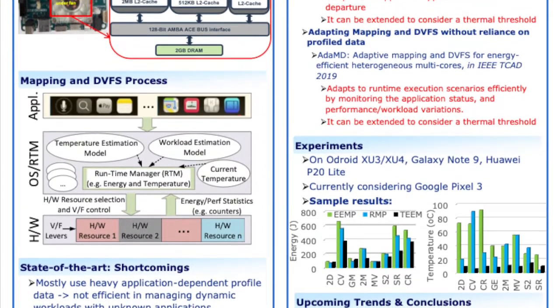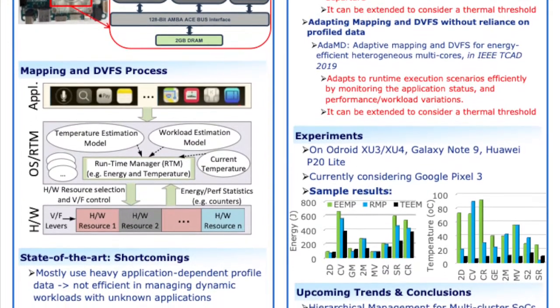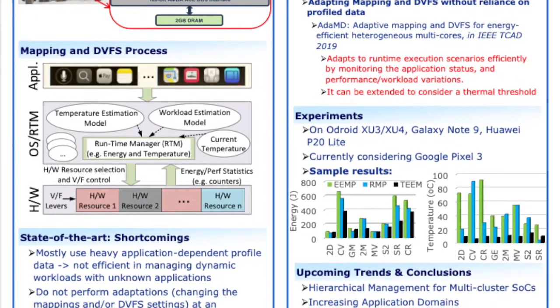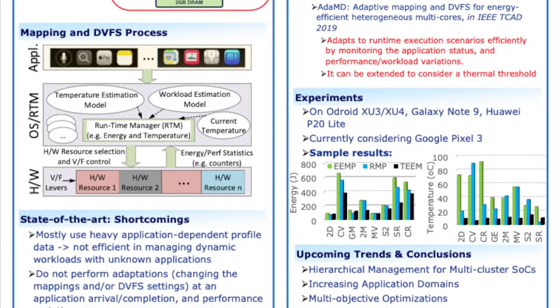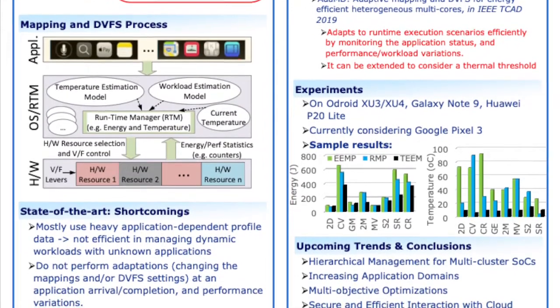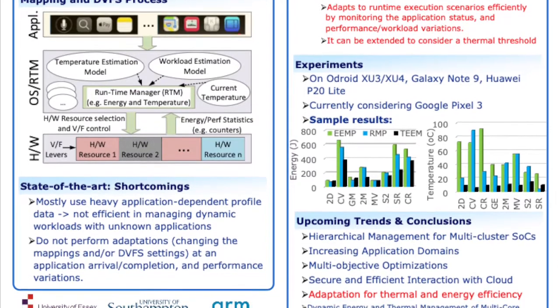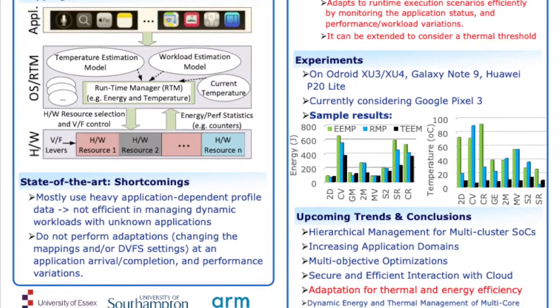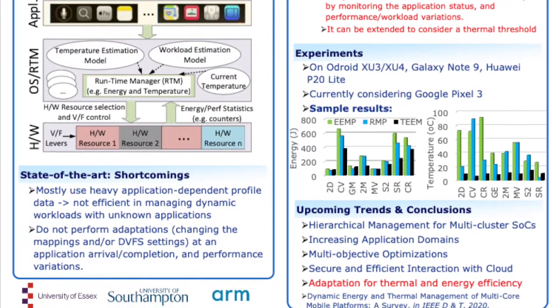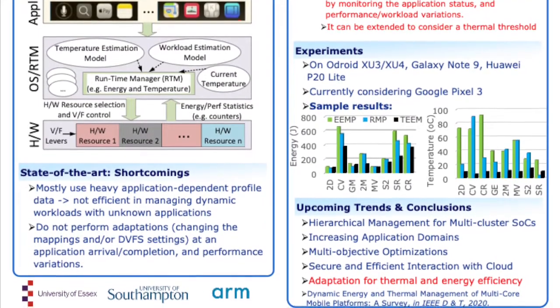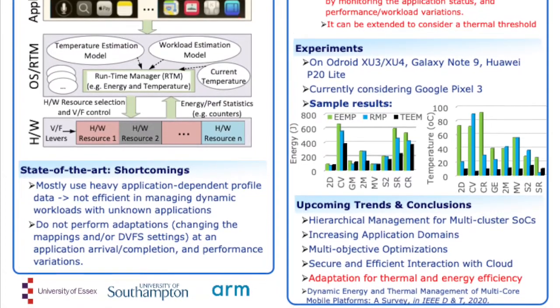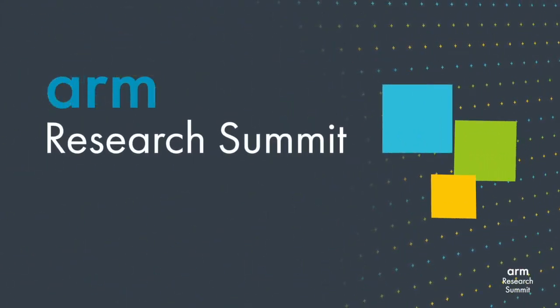Some upcoming trends: we feel there will be hierarchical management for multi-cluster SOCs, increasing application domains, multi-objective optimization, and secure and efficient interactions with the cloud, which will also lead to edge AI. More details are available in our survey paper — feel free to look into that. Thank you.